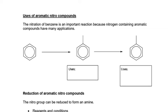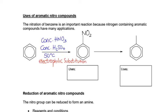In our final video, we're going to look at when we've done that nitration, what would be the uses of those nitro compounds. So remember if we took benzene, we can turn it into nitrobenzene. Can you remember the reagents and conditions? We had concentrated nitric and sulfuric acid, 50 degrees C, and it was called electrophilic substitution.